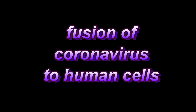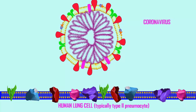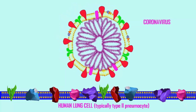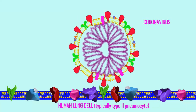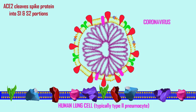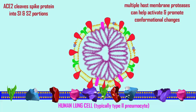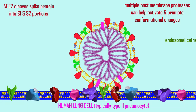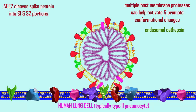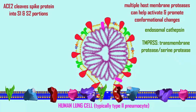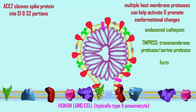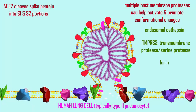Enveloped viruses include in their envelope a membrane which was taken from the cell of their previous host. Enveloped viruses want their envelope to then fuse with a membrane in their new host so that their nucleic acid can then be released inside the cell of their new host. If they target the cell membrane,